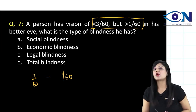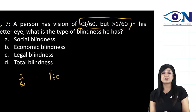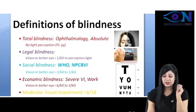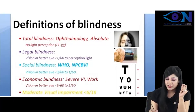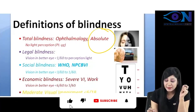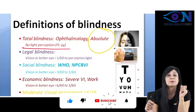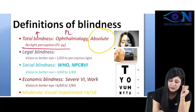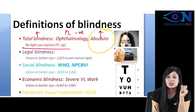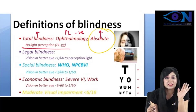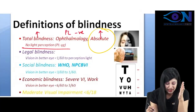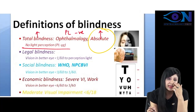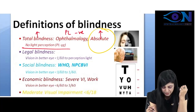Though this criteria is not used now, but still there are PYQs, so we can learn about this. When we talk about total blindness, it is also called absolute blindness. Absolute blindness means the patient is PL negative — not able to perceive even light. Then we have legal blindness, social blindness, economic blindness, and moderate visual impairment.